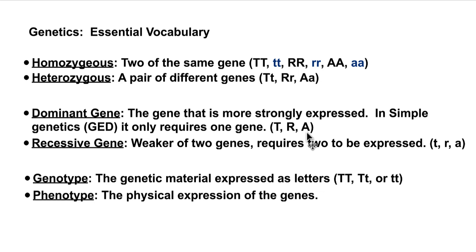The other set of terms are genotype and phenotype. Genotype is what we call the set of genetic material expressed as letters — it represents the actual DNA, the genes on the DNA. The phenotype is the physical expression of the genes. Notice that phenotype begins with 'ph,' and physical expression begins with 'ph' — that might help you remember it.